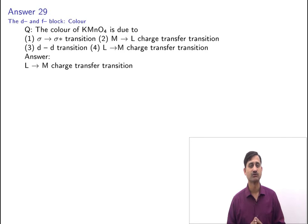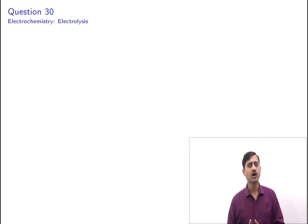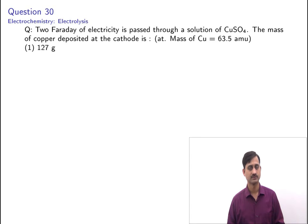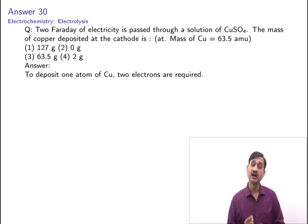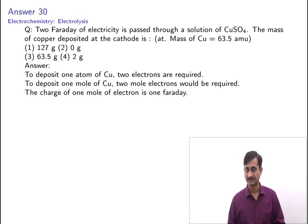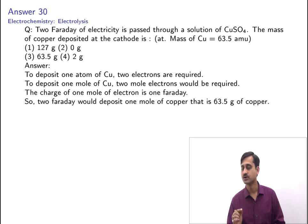The final question is from electrochemistry, subtopic electrolysis. Two faradays of electricity is passed through a solution of copper sulfate. The mass of copper deposited at the cathode is (atomic mass of Cu = 63.5 amu): 127 g, 0 g, 63.5 g, or 2 g? To deposit one atom of copper, two electrons are required (Cu²⁺ + 2e⁻ → Cu). To deposit one mole of copper, 2 moles of electrons = 2 faradays are required. Therefore, 2 faradays deposits 1 mole = 63.5 grams of copper.